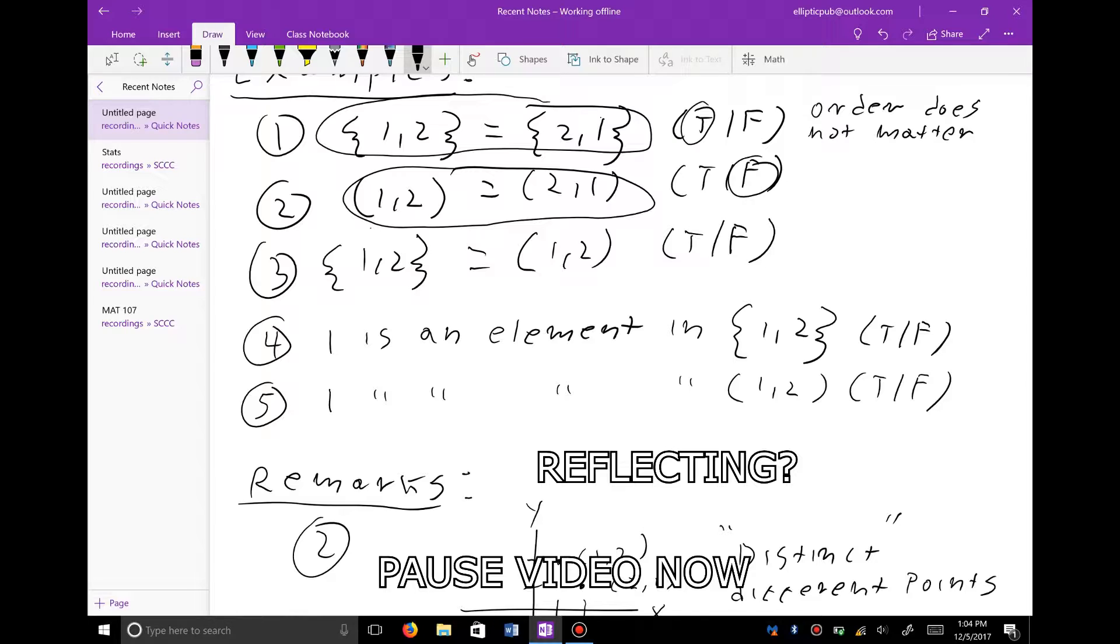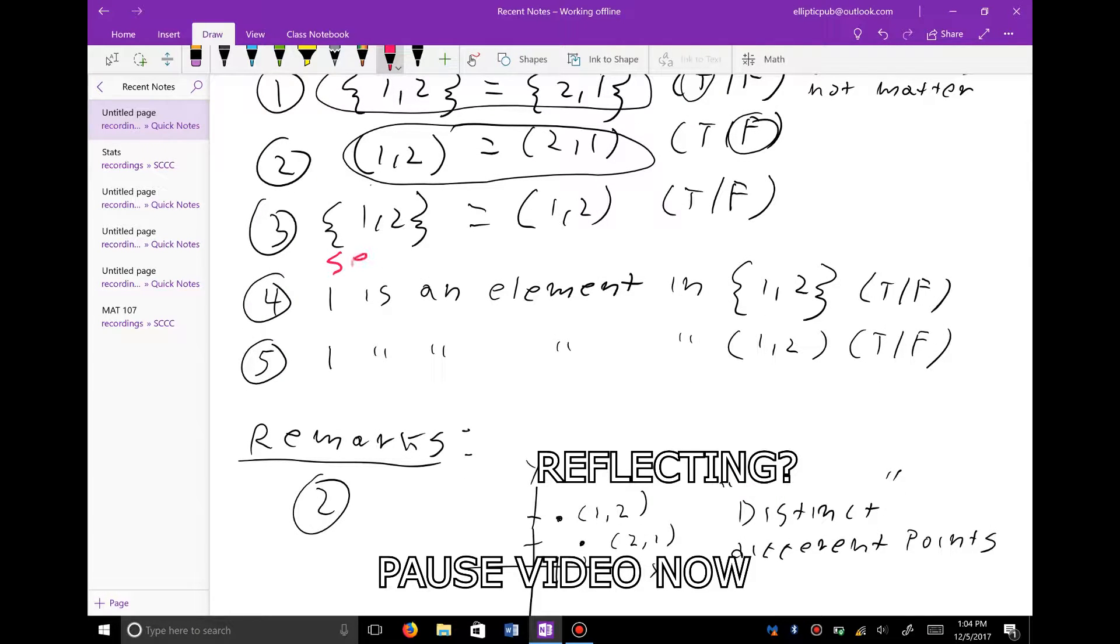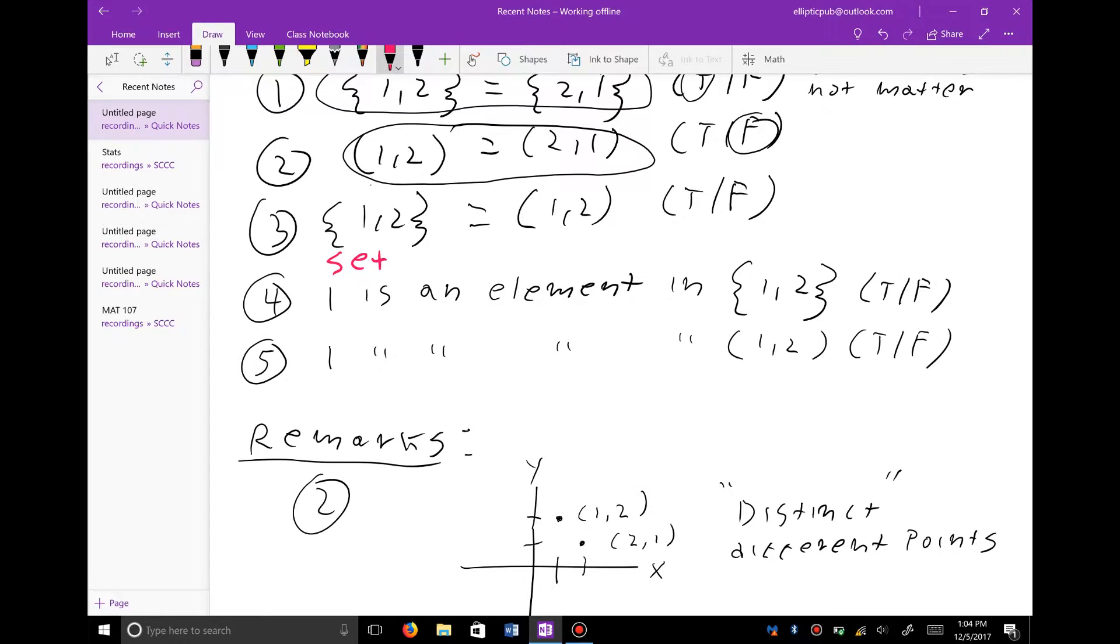Now let's look at number three. For number three, we have a set on the left-hand side of this alleged equation, and we have an ordered pair on the right side. And because these are different objects in mathematics, this has to be false. So hopefully you're clear on the difference between an ordered pair and a set.